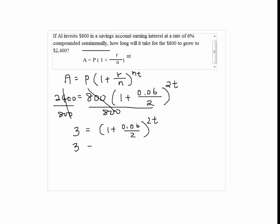Now 3 equals 1 plus 0.06 divided by 2 will be 1.03 to the 2T.